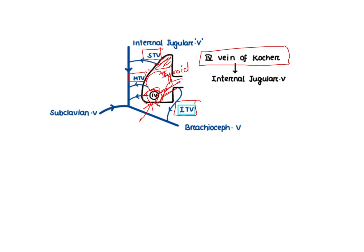It is very clear from the figure that the superior thyroid vein, the middle thyroid vein, and the fourth vein of Cochin generally drain into the internal jugular vein. The brachiocephalic vein is formed by the merging of the internal jugular vein and the subclavian vein.